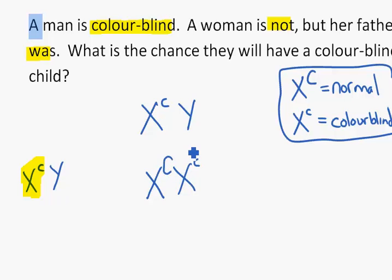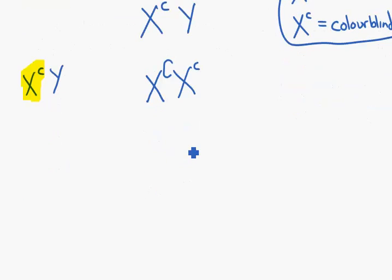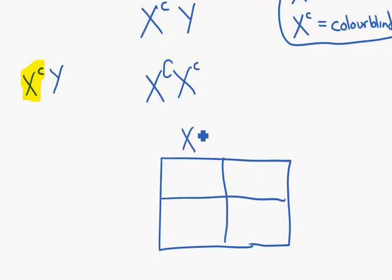Now we have our parents. We do our Punnett square as normal. We add our two parents, the male and the female, and then we fill in as per any other Punnett square.